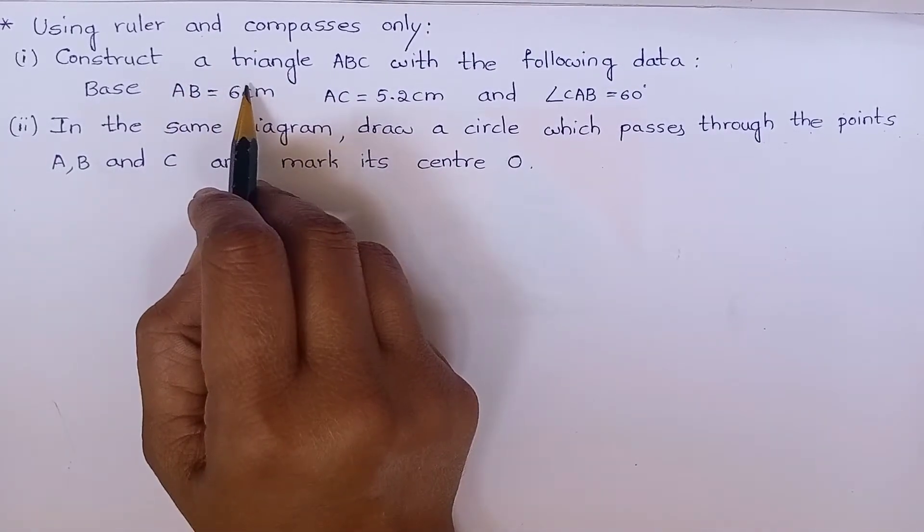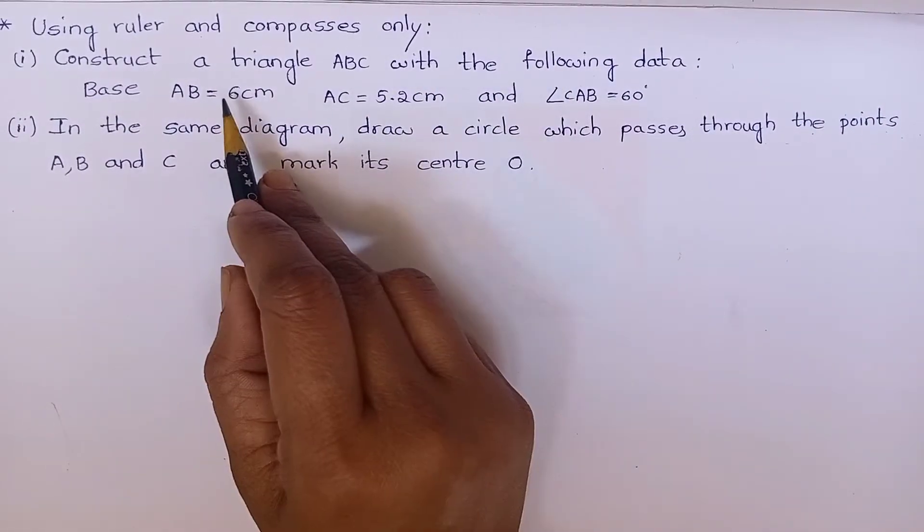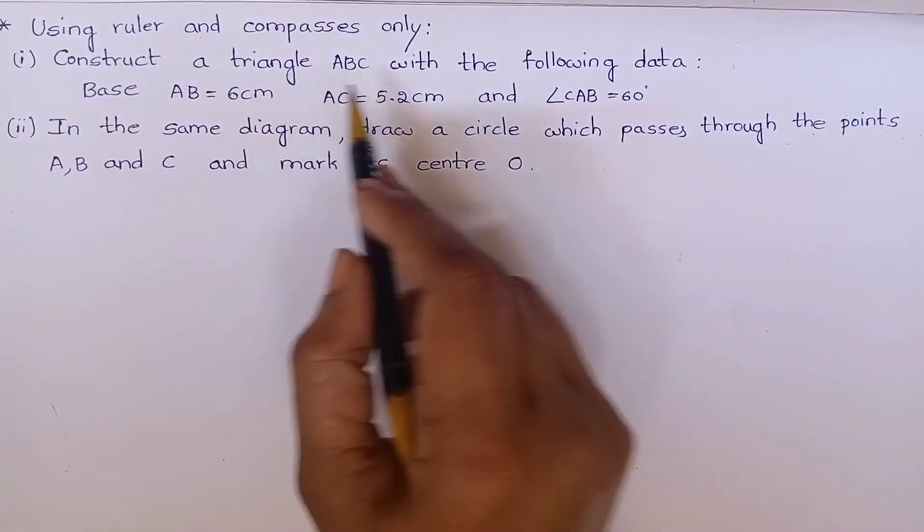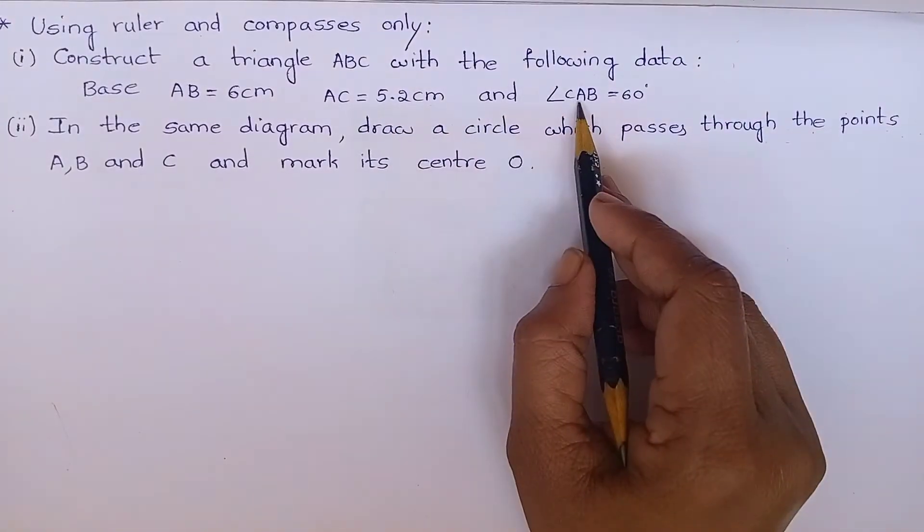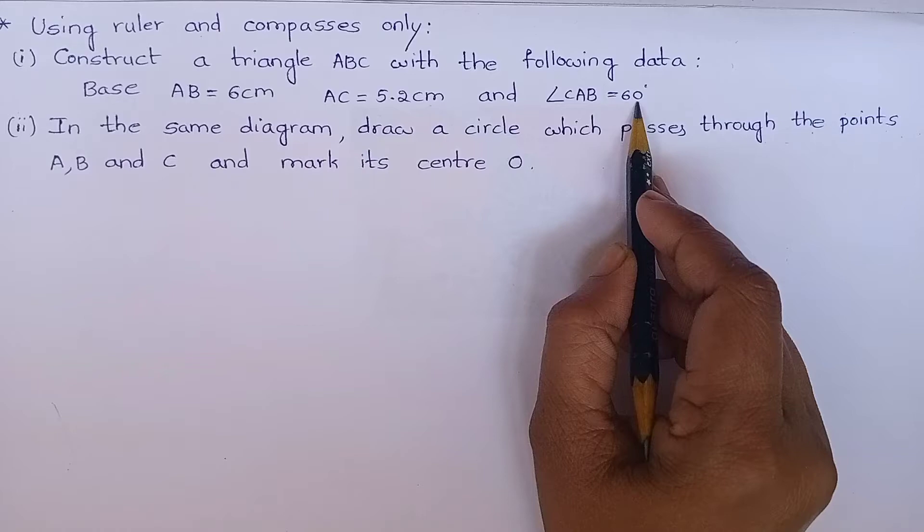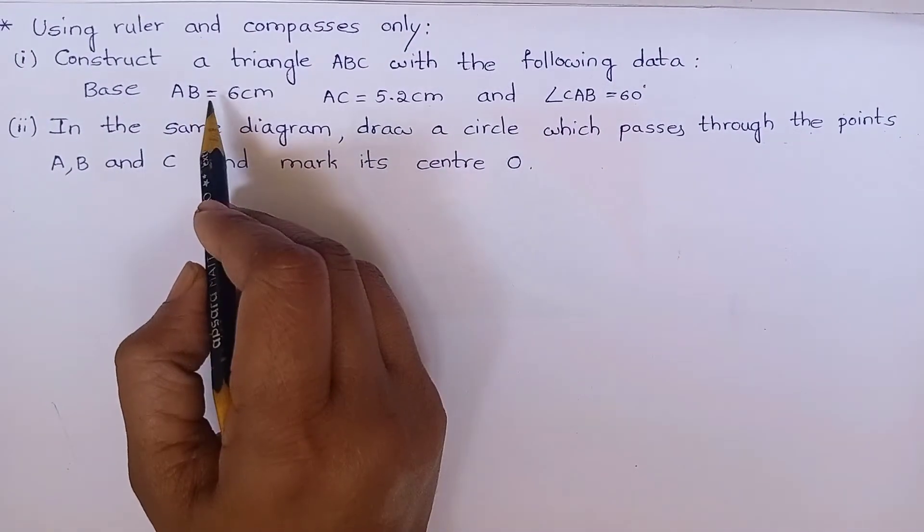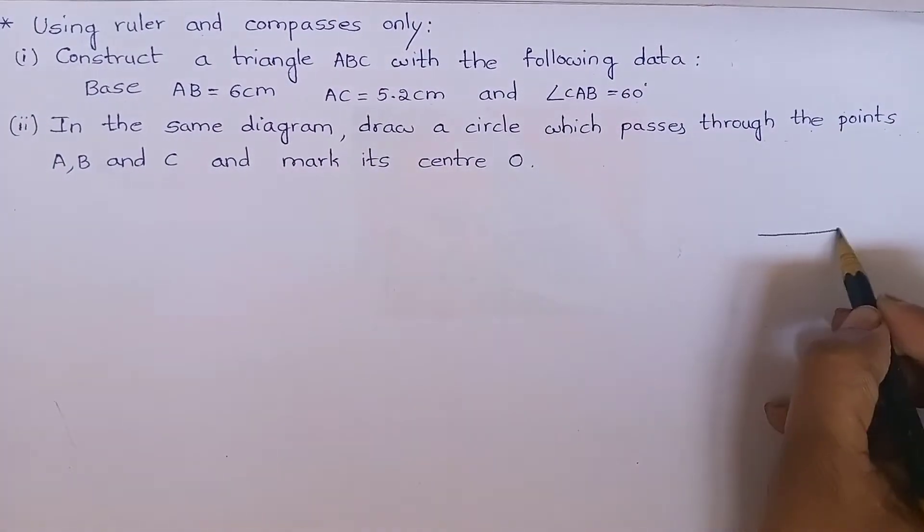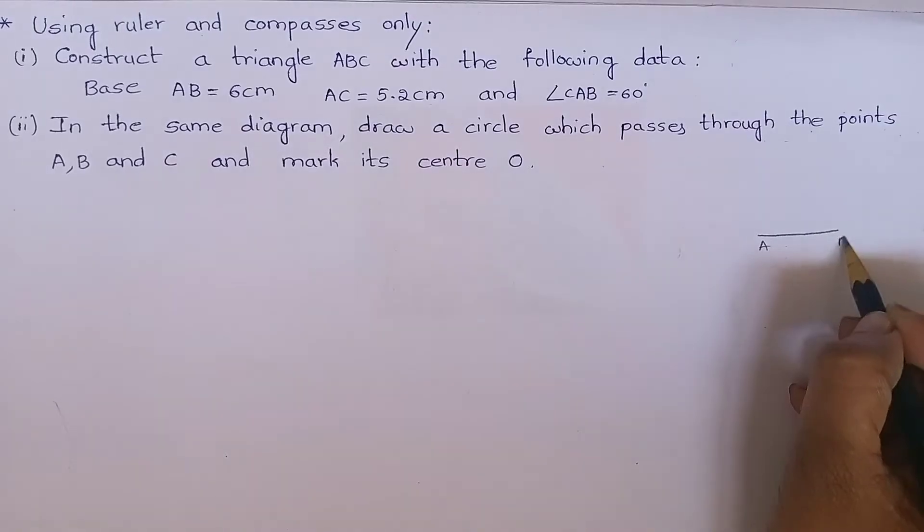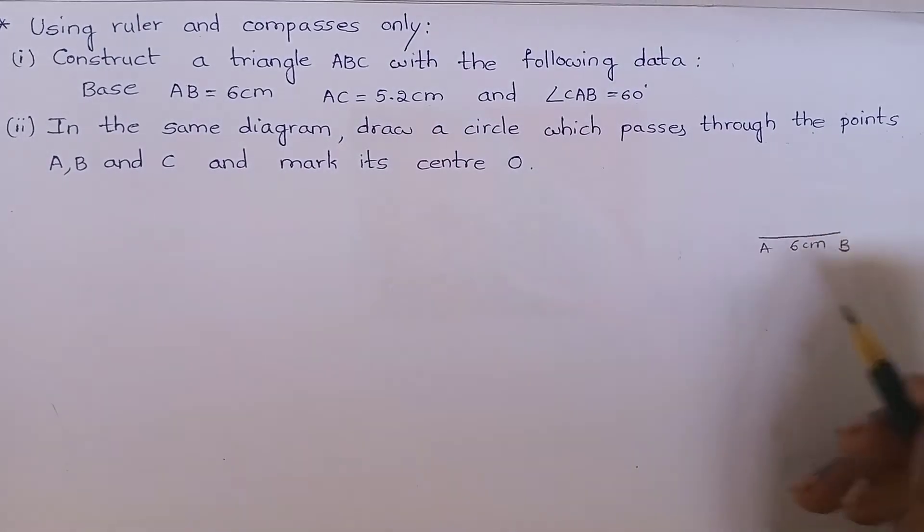Construct a triangle ABC with the following data: Base AB is equal to 6 centimeters, AC is equal to 5.2 centimeters, and angle CAB is equal to 60 degrees. Now see here, base is AB. Already they have mentioned in the problem, so we have to take AB as base, that is 6 centimeters.